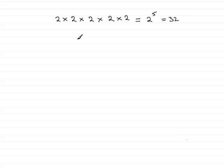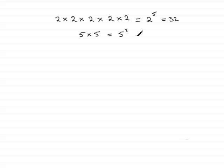Here's another one. Suppose we had 5 times 5. We could write this for short as 5 with a little 2 up here. We could say that this is 5 to the power 2. However, 5 to the power 2, or anything to the power 2, is often called squaring. So we would say that this is 5 squared rather than 5 to the power 2. 5 squared is 25.